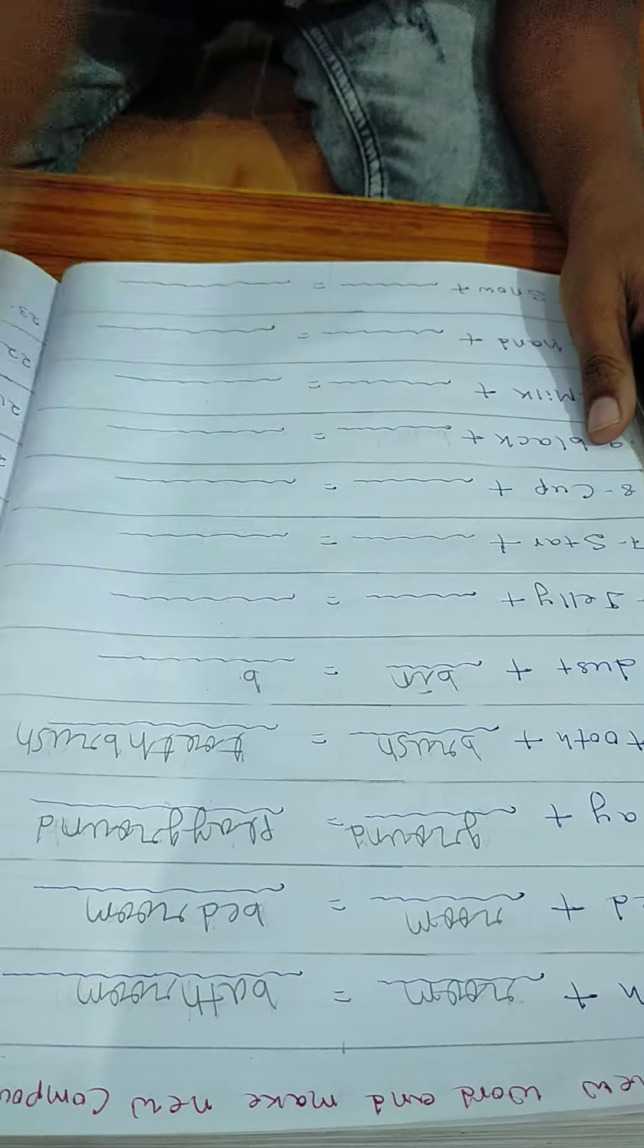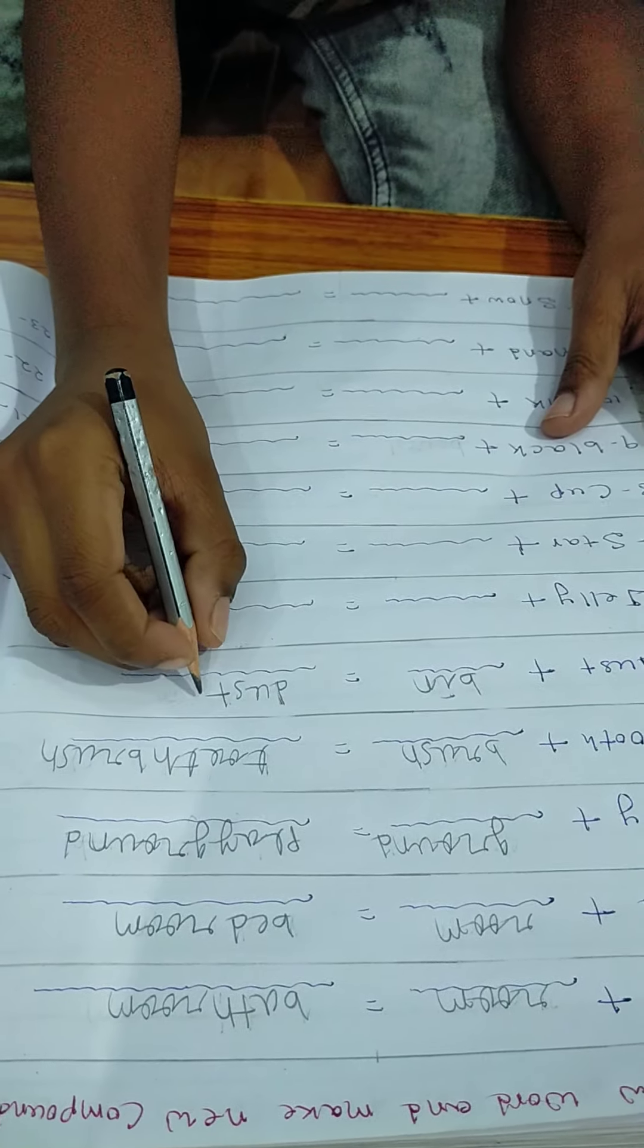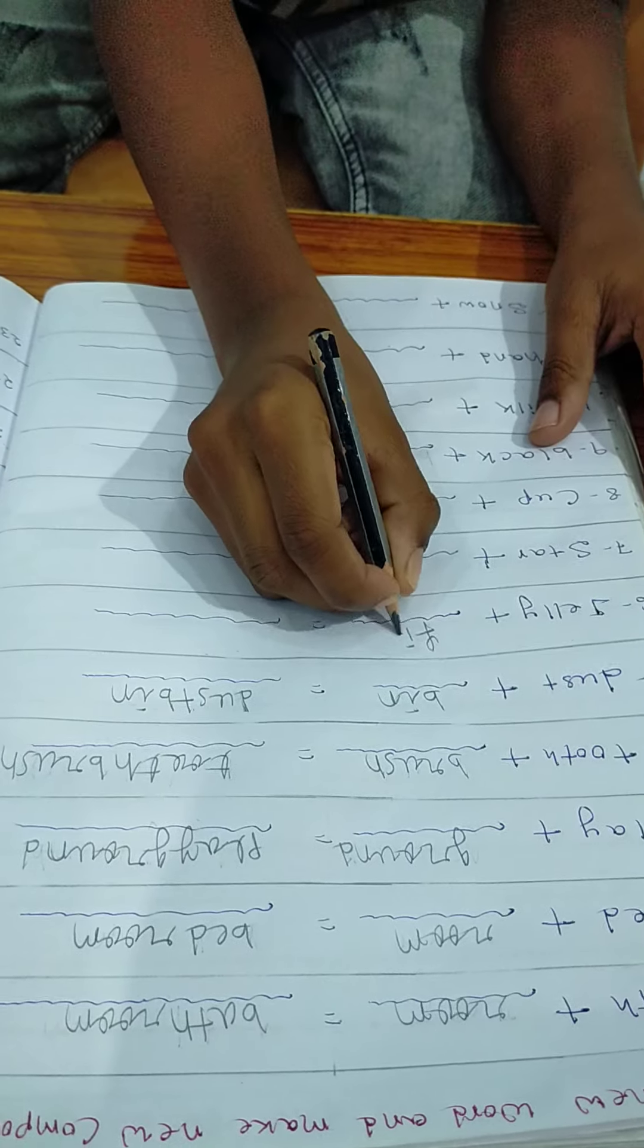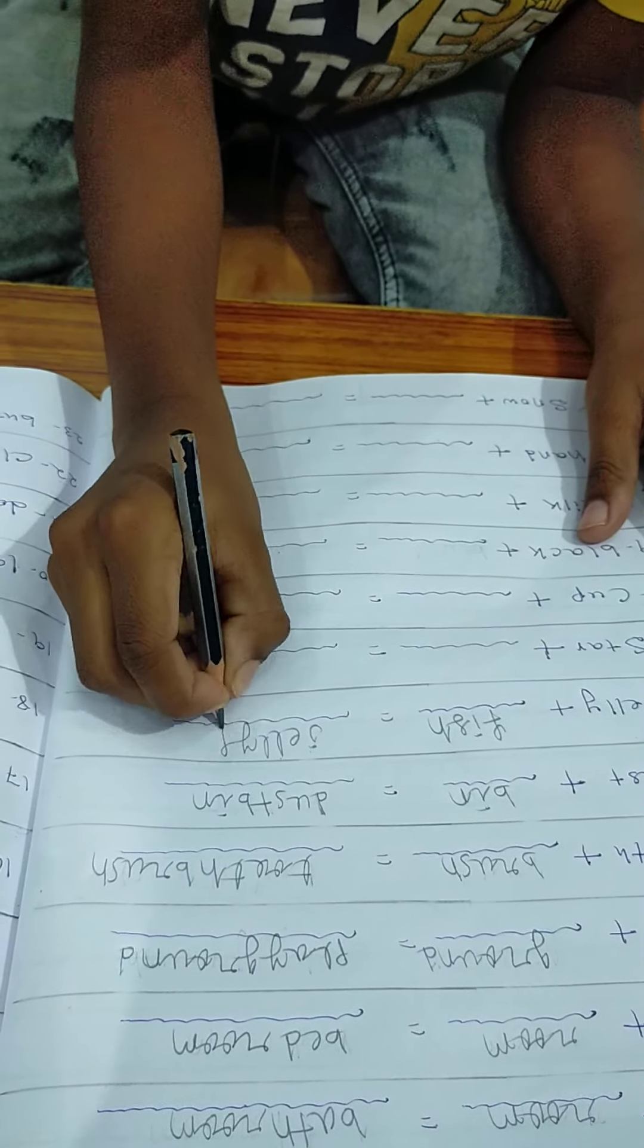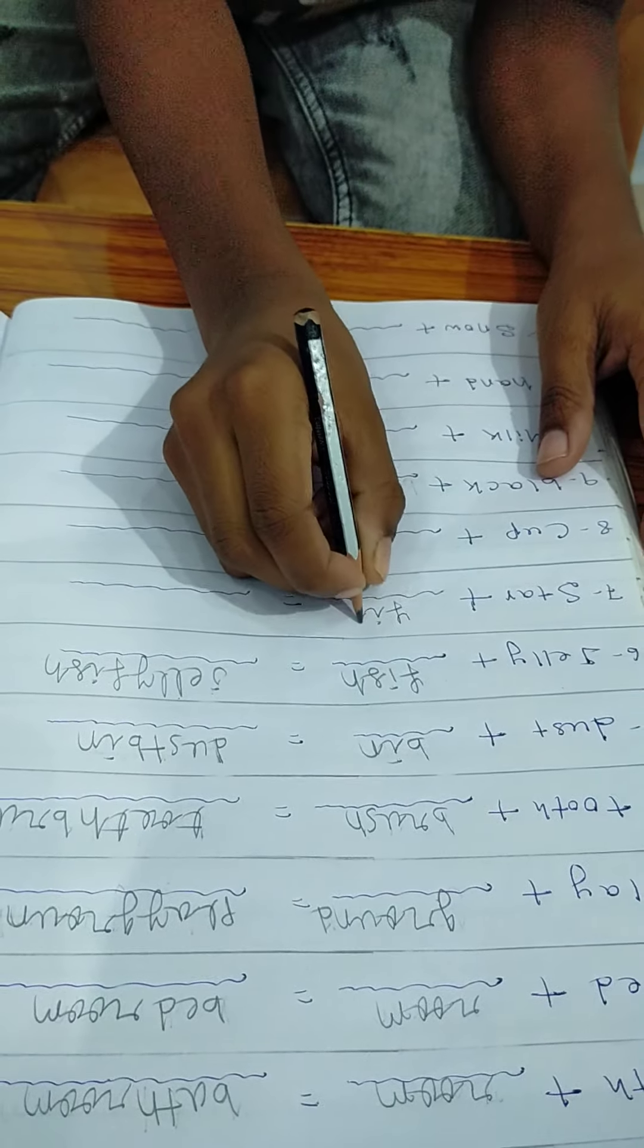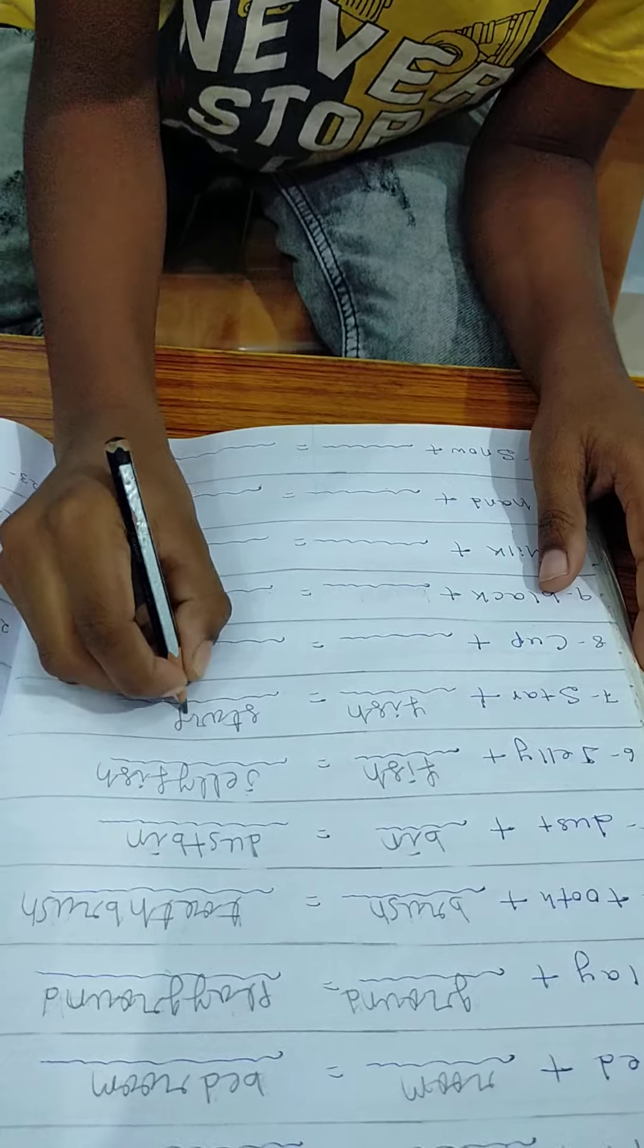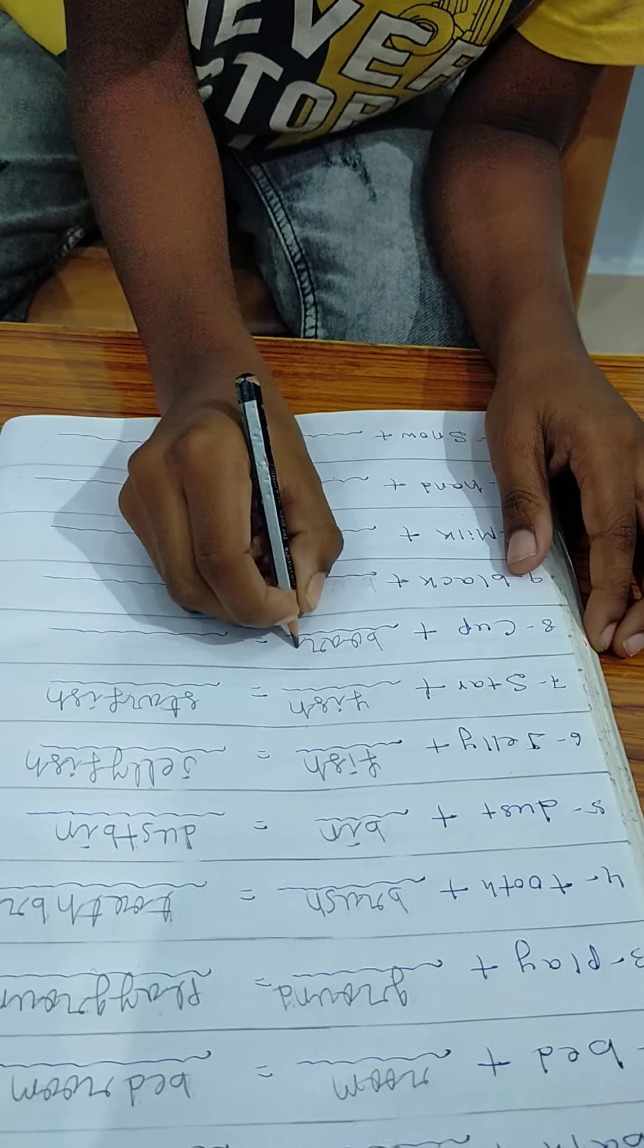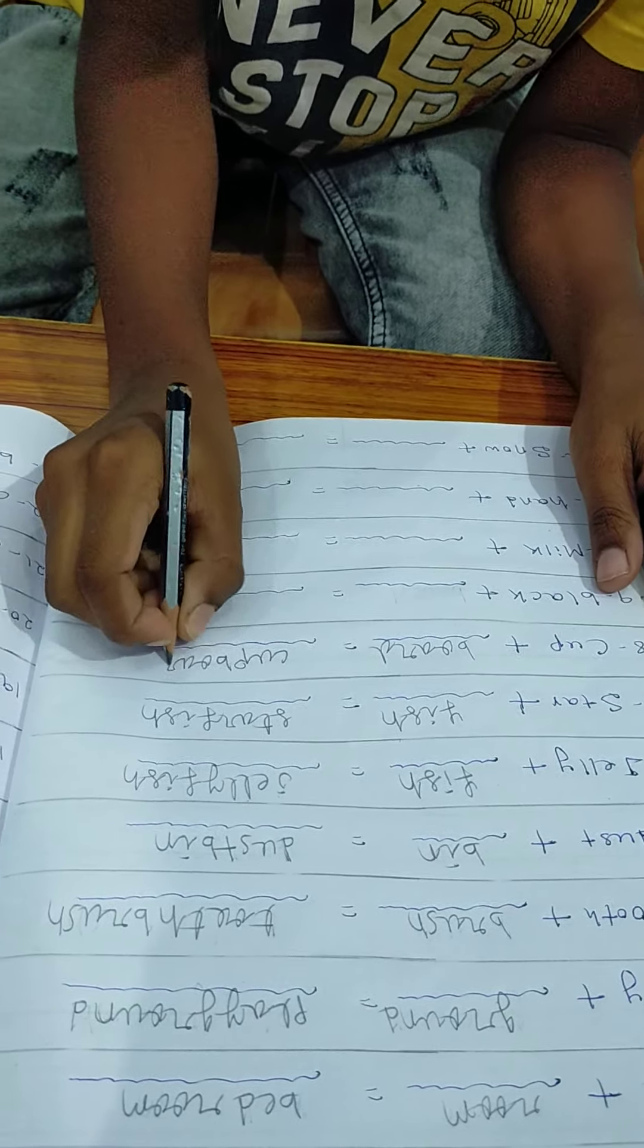Dustbin. Starfish. F-I-S-H, fish. S-T-A-R, star. Starfish. Cupboard. B-O-A-R-D, board. C-U-P, cup.